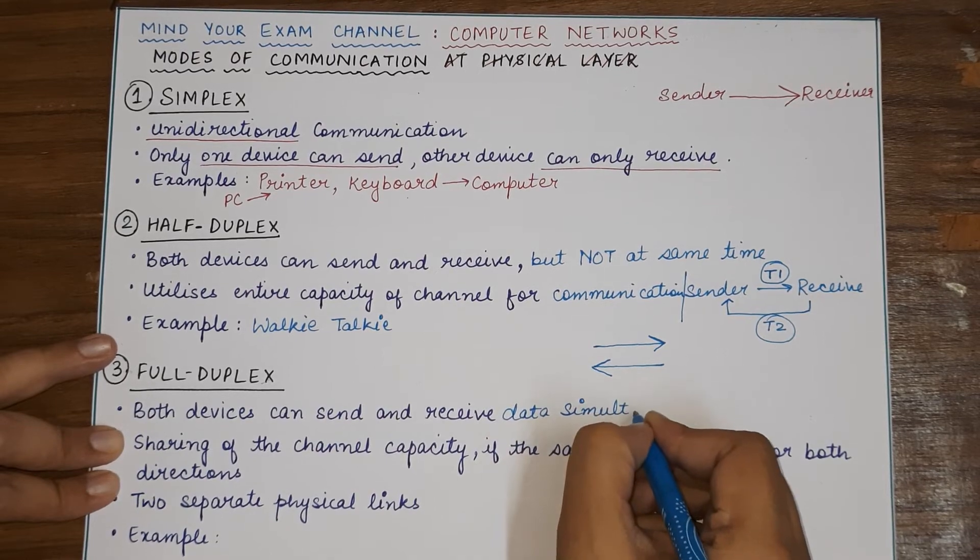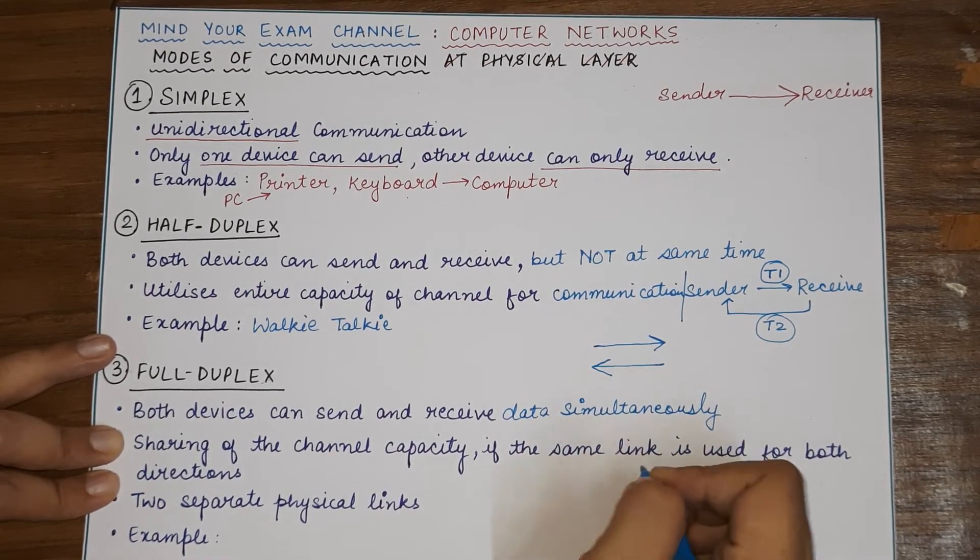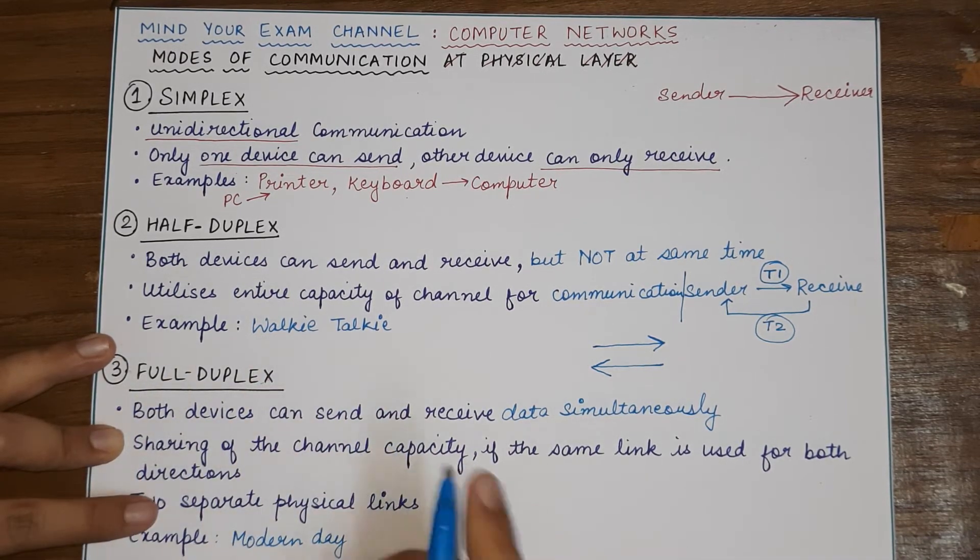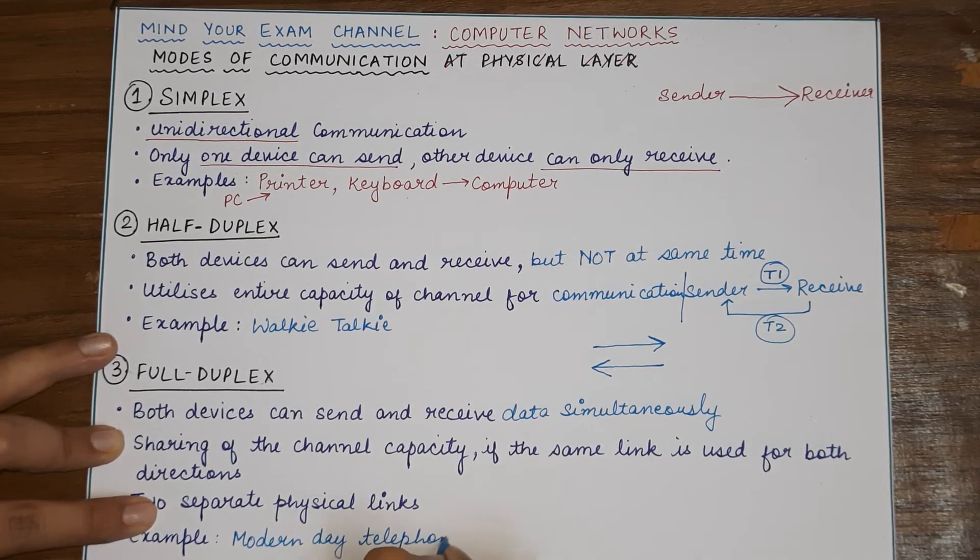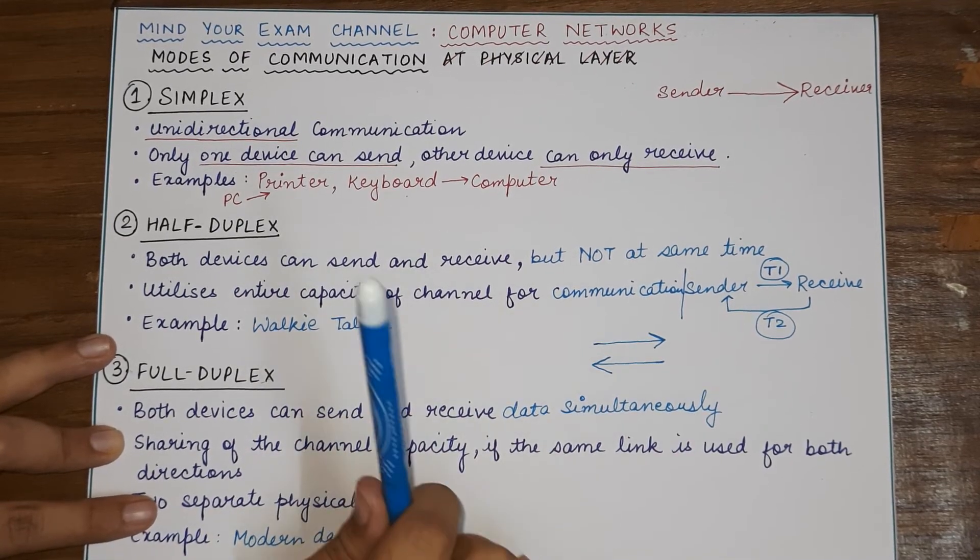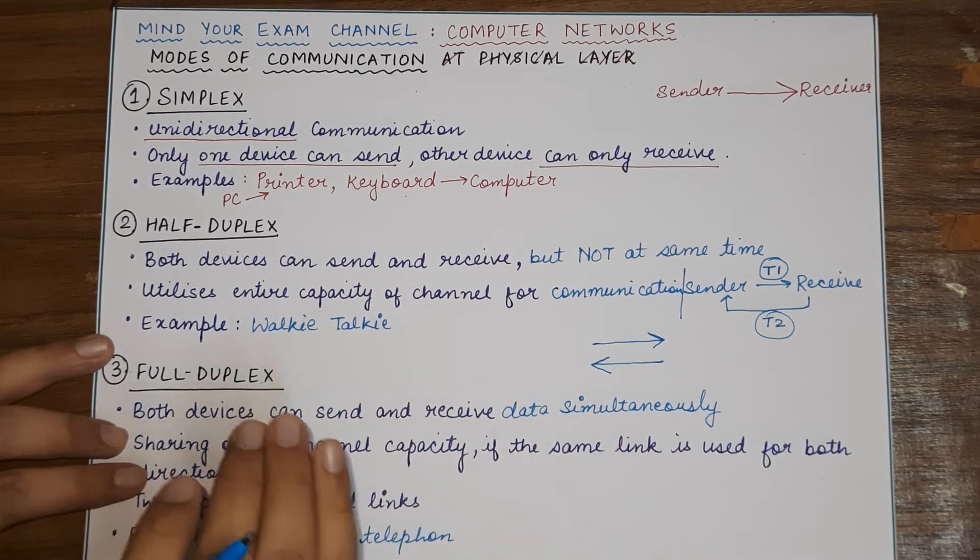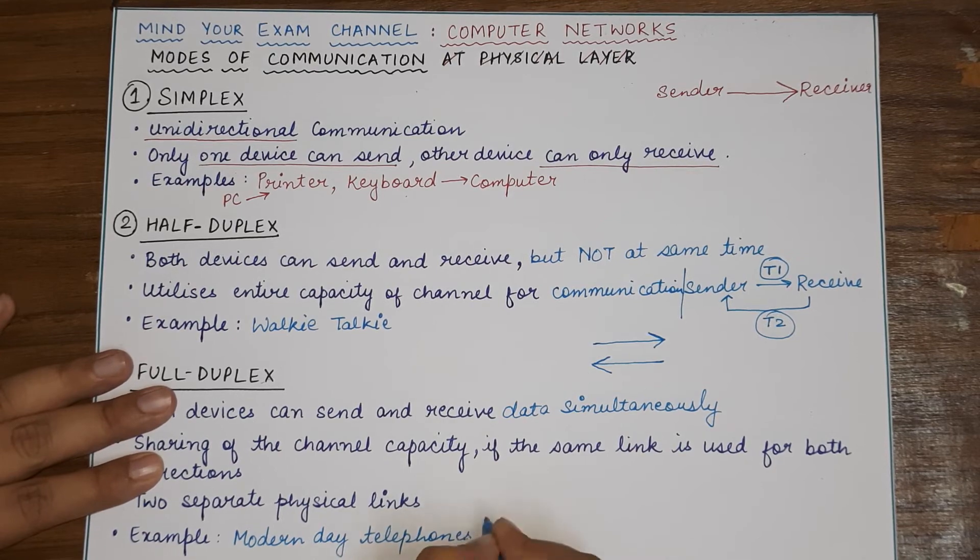So, it is like the modern-day telephone or mobile phones which allow both the sides to talk and even if both the sides are talking at same time, the data is being sent, the data is being received but you might or not understand what the other person is saying. But there is no restriction from the side of communication. So, there is no restriction because of the mode of communication. Modern-day telephones or mobile phones.